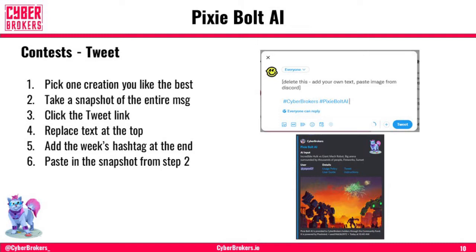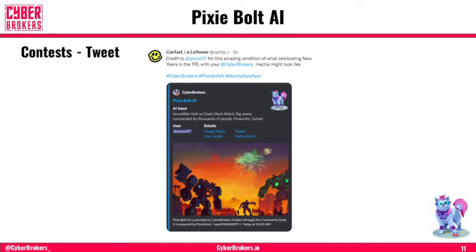I want to quickly talk about the tweet part. If you click the instructions it'll have a full step-by-step process on how to create these tweets, but briefly: pick your creation, take a snapshot of the entire message. You click the tweet link and a box will come up on your Twitter. You change the text to what you want, add the hashtag, paste the image, and you'll get a result. So this was my tweet — I was highlighting one of Yo-Yo's creations. This looked like a Mecha New Year, so maybe the theme for the week was Mecha New Year. The AI input to create it looks different because sometimes you need to use different words.